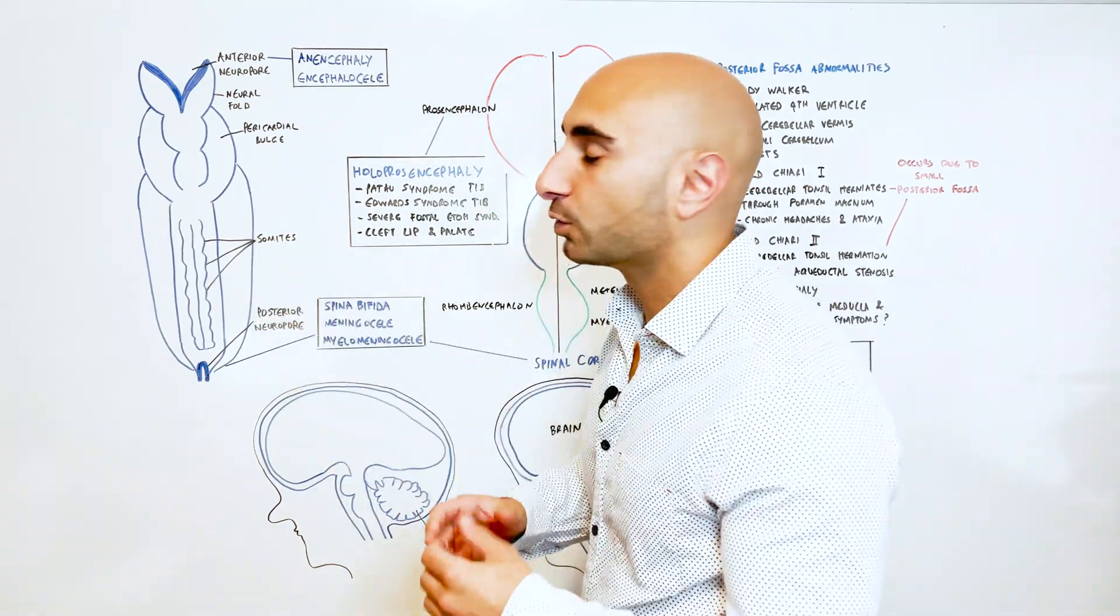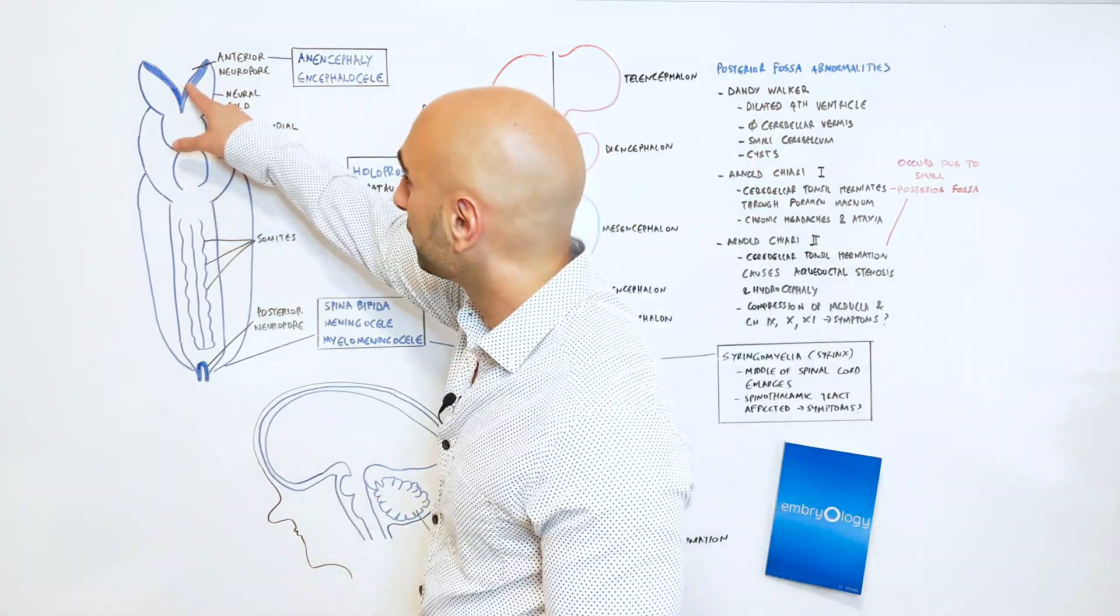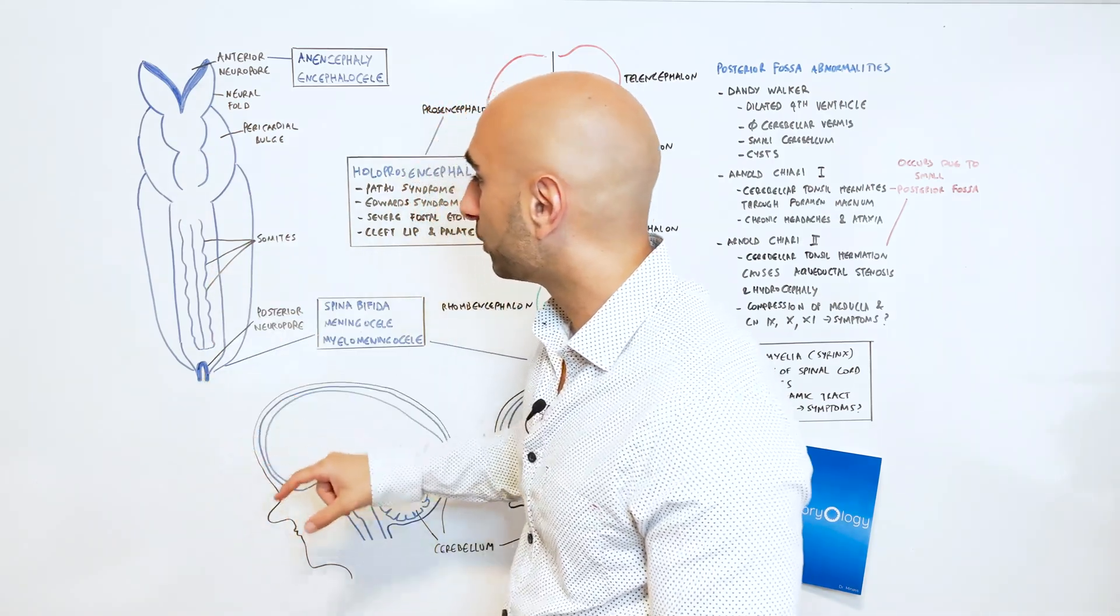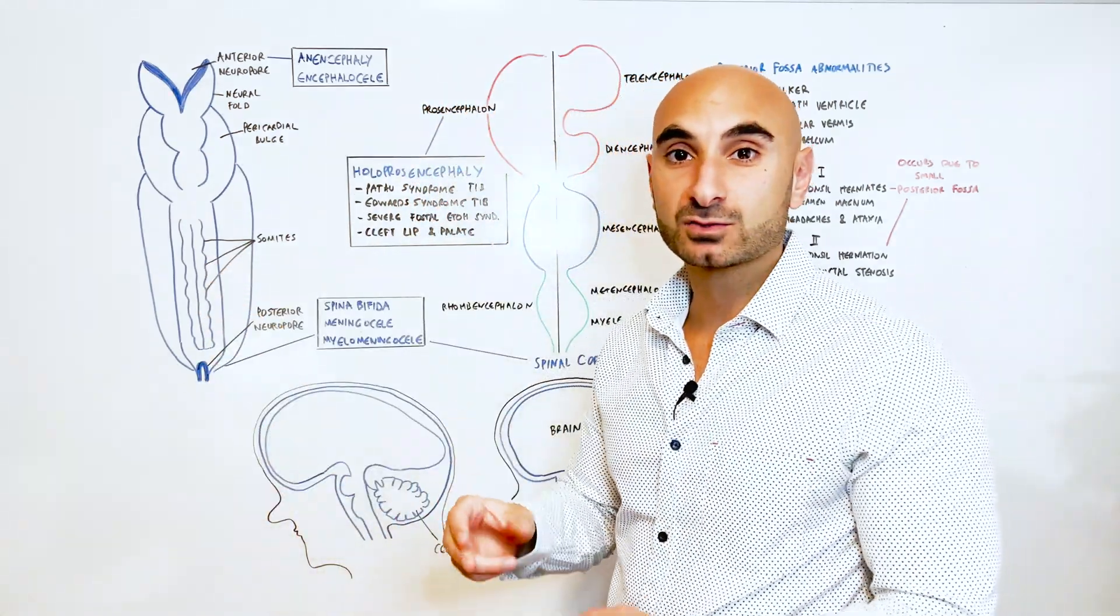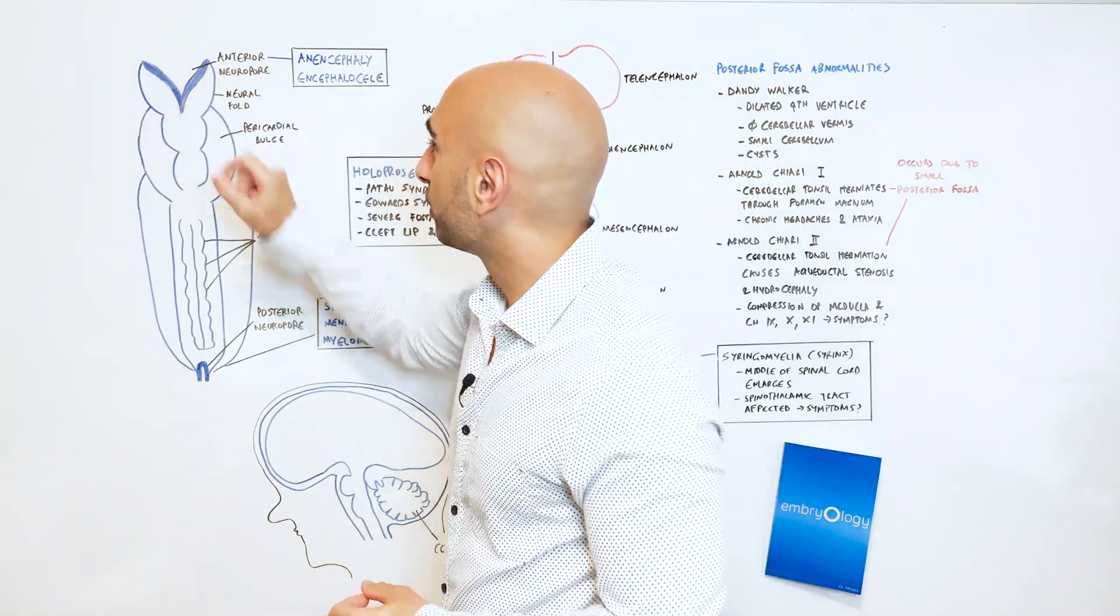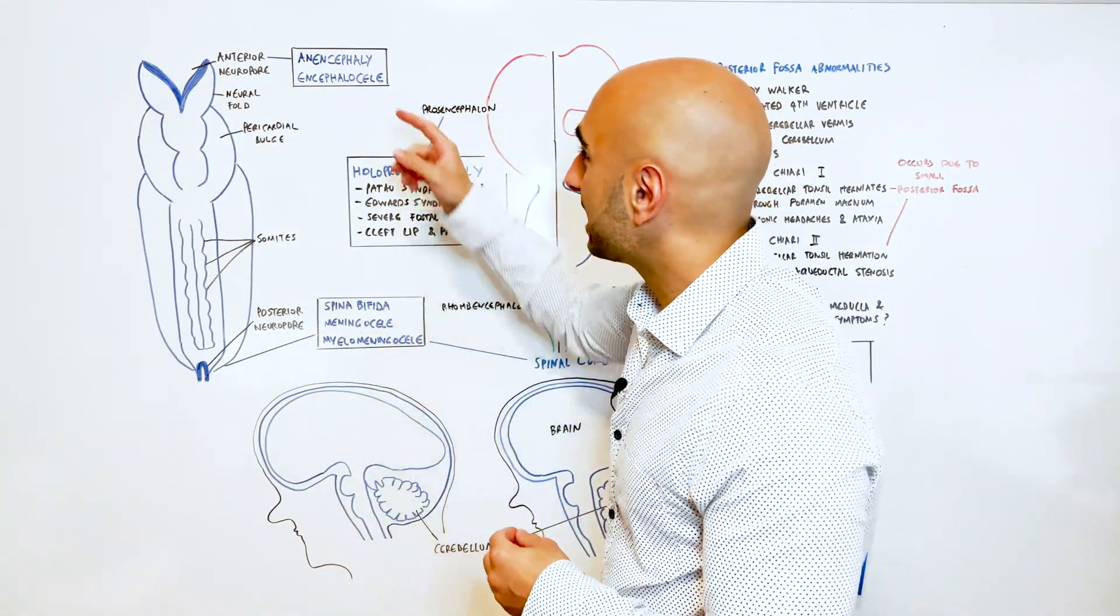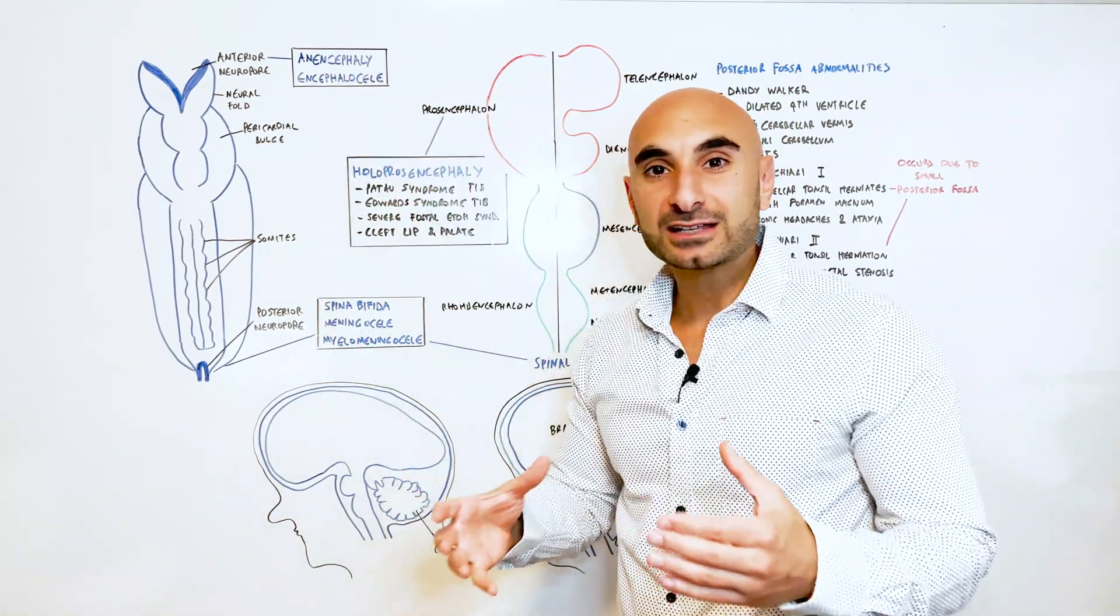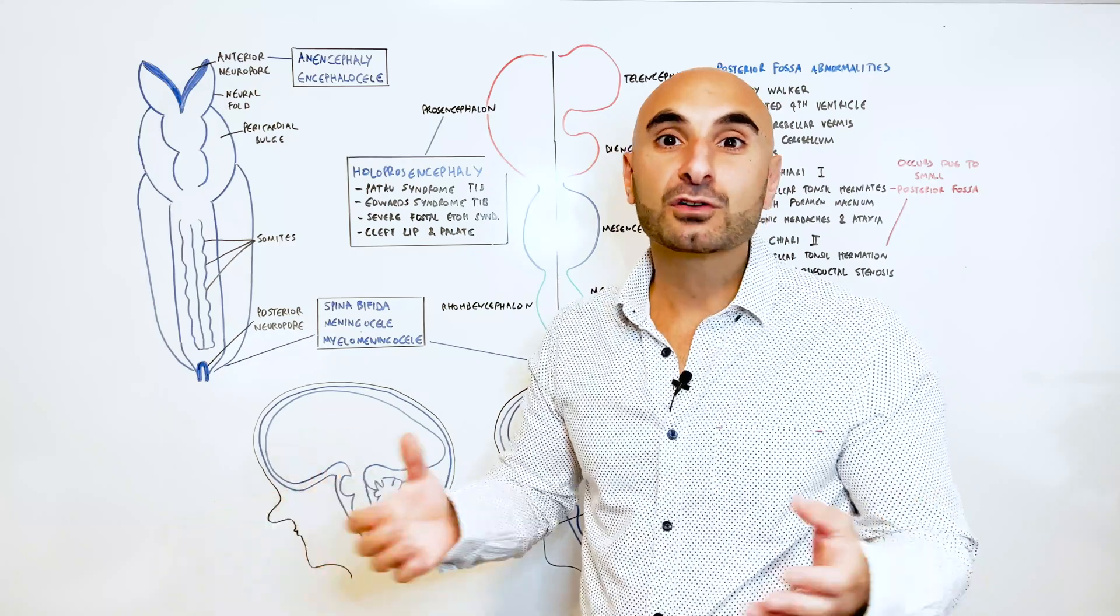Over here we have a dorsal view of a developing embryo. The anterior neuropore with the neural fold and the posterior neuropore. These squiggles being the somites, which will turn to muscle. Failure of the anterior neuropore to close causes anencephaly and encephalocele. Anencephaly is essentially no formation of the brain.